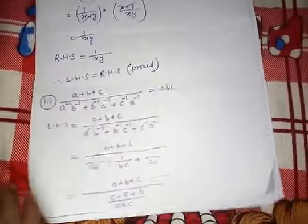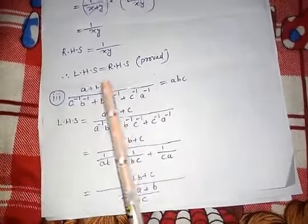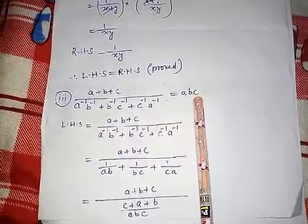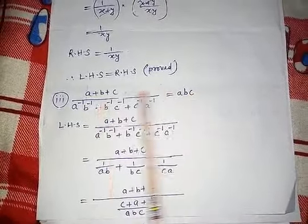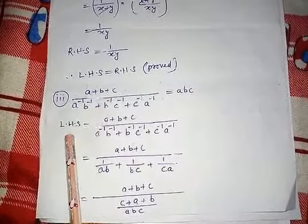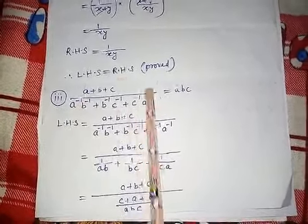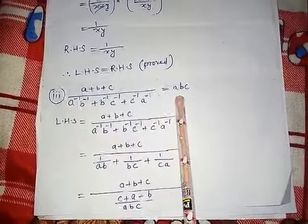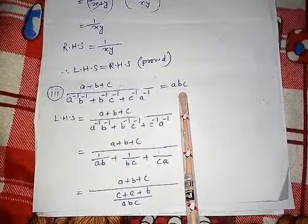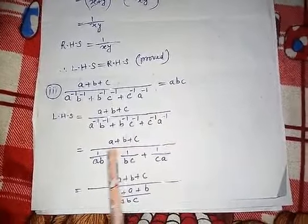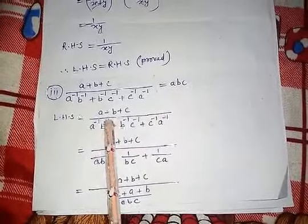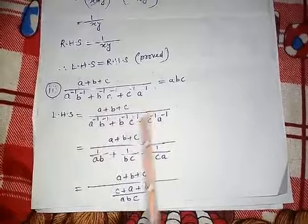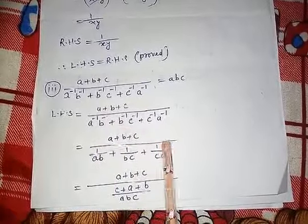Next, number 3. We have this question as the left hand side and this as the right hand side. We write the left hand side portion here and will try to bring our answer to ABC. So we wrote the same A plus B plus C expression.